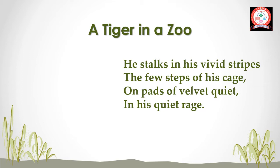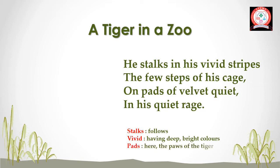Let's understand the difficult words and their meanings. 'Stalks' means follows. 'Vivid' means having deep, bright colours. 'Pads' means the paws of a tiger. And 'rage' means violent, uncontrollable anger.